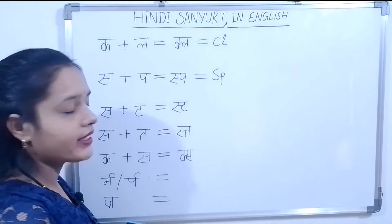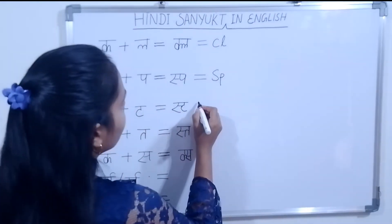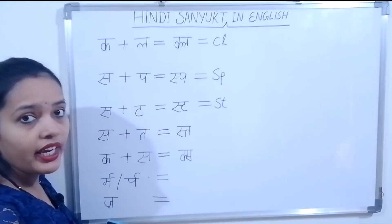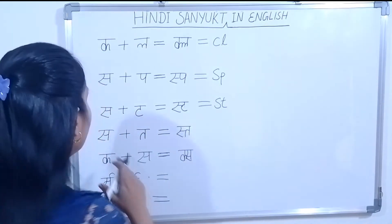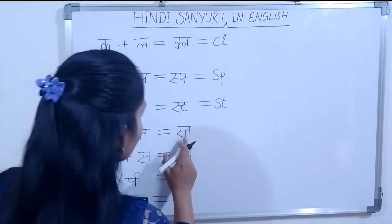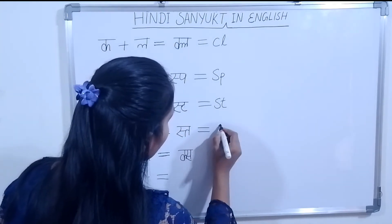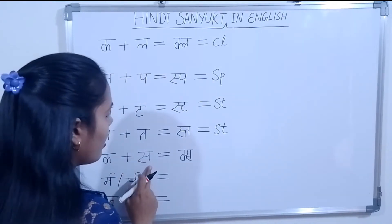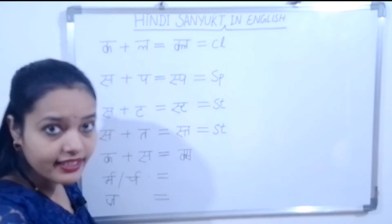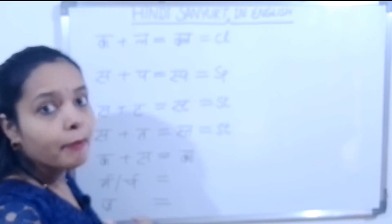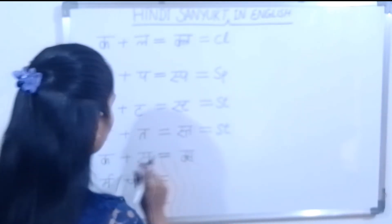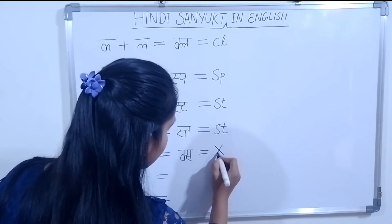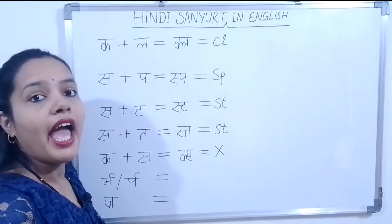Straight — here we use S, T. What do we use? S, T. Star — Star ke liye bhi hum use karenge S, T. Crop and Sir milke huwa hai — jaise hum Ox, Box yeh sab likhte hain, to uske liye hum use karenge X. Kya use karenge? X.